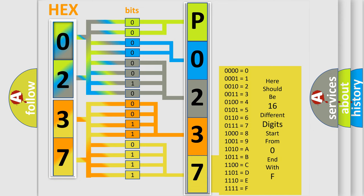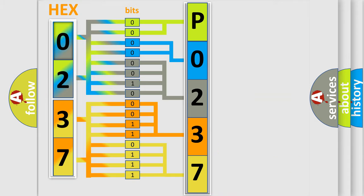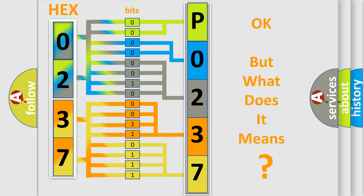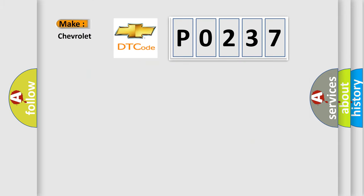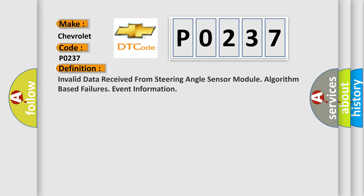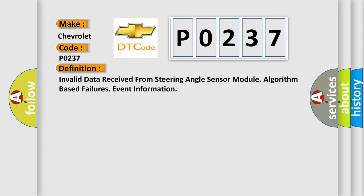We now know in what way the diagnostic tool translates the received information into a more comprehensible format. The number itself does not make sense to us if we cannot assign information about what it actually expresses. So, what does the diagnostic trouble code P0237 interpret specifically for Chevrolet? The basic definition is: Invalid data received from steering angle sensor module — algorithm-based failures event information.